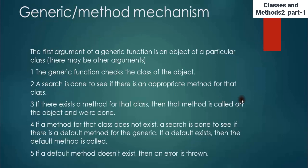So what is the mechanism behind generic methods? The first argument of a generic function is an object of a particular class. There may be other arguments as well, but the first argument should be of a particular class. The generic function checks for the class of the object, and a search is done — for example, if you call show, the methods package is searched to find the appropriate method for that class.